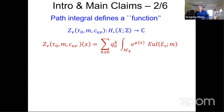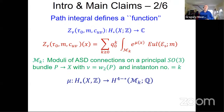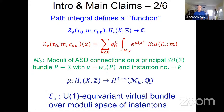Here's the definition. We sum over k greater or equal to 0, q0 to the k. We integrate over M_k, where M_k is the moduli space of anti-self-dual connections on a principal SO(3) bundle P over X with second Stiefel-Whitney class equal to the 't Hooft flux nu and instanton number k. We integrate e to the mu of x, where mu is the famous Donaldson map from the homology of X to the cohomology of instanton moduli space, and E_s is a U(1) equivariant virtual bundle over the moduli space.